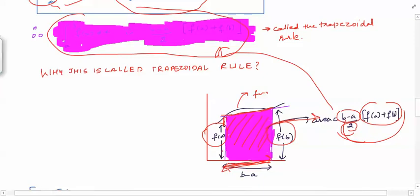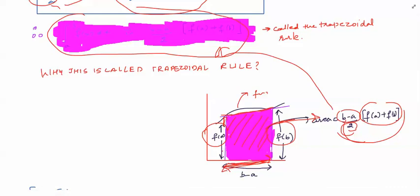So in this video we have derived the trapezoidal rule formula, which approximates the integral from a to b of f(x) dx. In the next video we will compute the error and look at some examples. Thank you.